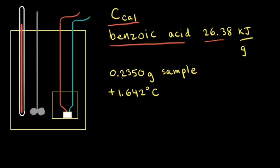So let's say we have a 0.2350 gram sample of benzoic acid, we put that in our calorimeter, and we go ahead and combust the benzoic acid, and we find that the temperature increases by positive 1.642 degrees Celsius.